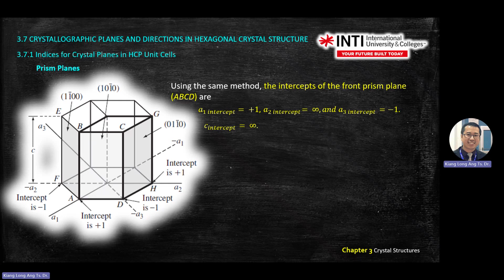Similarly, for 1, minus 1, 0, 0 — minus 1 is A1, you move one step here, mark A1. Then A2 negative 1 — from center, this is positive, this is negative — you move one step, mark here. 0 means infinity for A3; you can just draw a line along that line — infinity means it's in this direction. The fourth number will be C: 0 means infinity, going up. This is how you draw the plane.